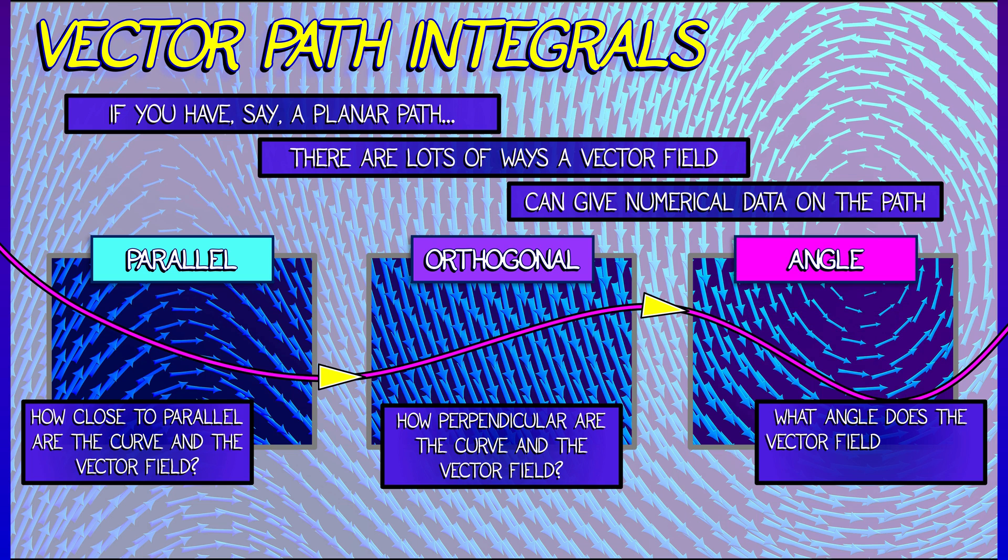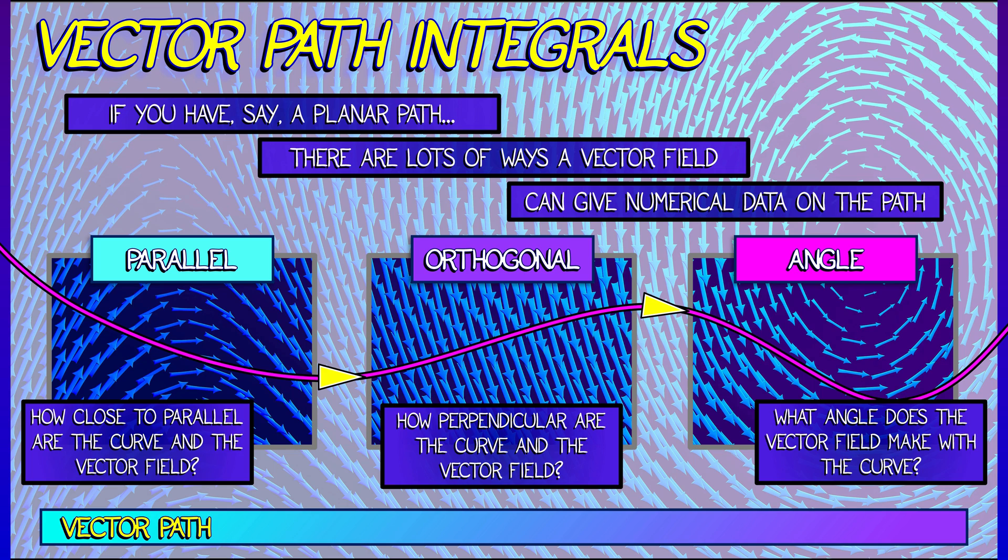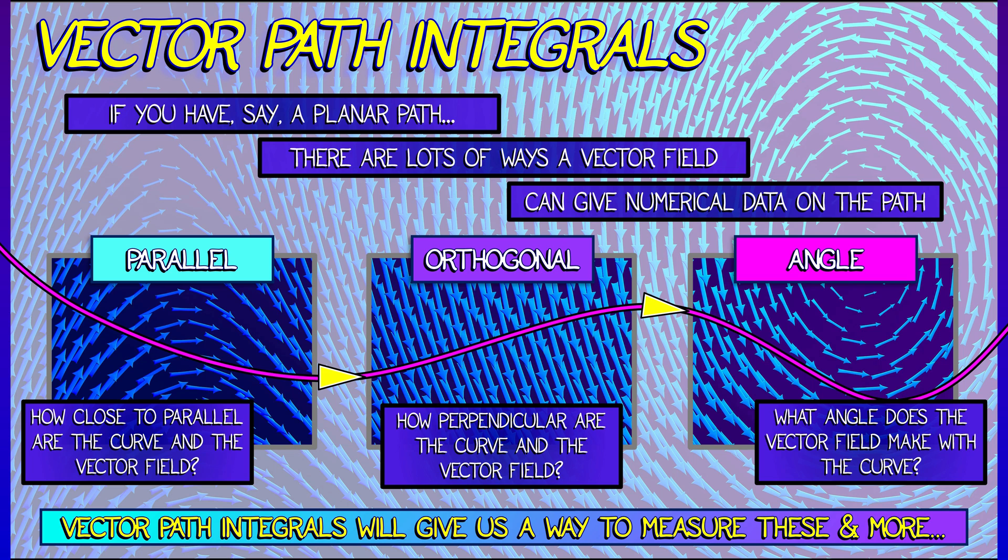In general, what's the angle between the vectors in the vector field and the tangent vectors to your path? This is going to be at the heart of path integrals associated to vector fields.